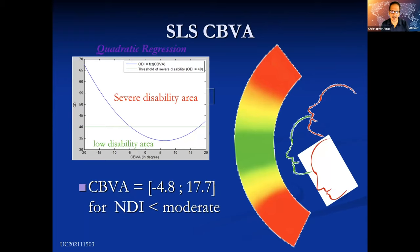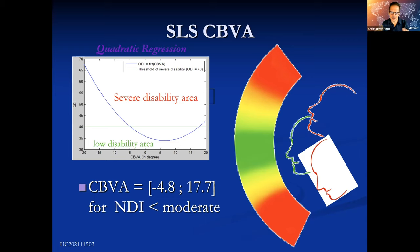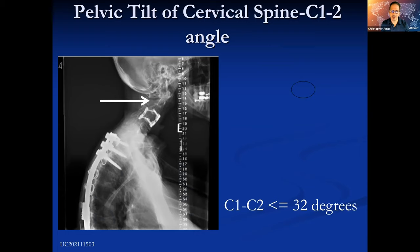We then took a deeper dive at chin-brow vertical angle. This is work headed up in our group by Themi Protopsaltis, where we found that below negative 4.8 degrees and above 17 degrees, patients have a significant drop-off in their disability scores. This indicates that range is probably appropriate, with some subtle nuances — for example, the ankylosing spondylitis patient should be kept a little head down in their chin-brow vertical angle. This gives us a working paradigm and was useful for the early iteration of our classification.